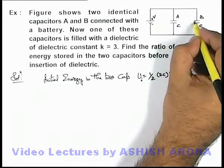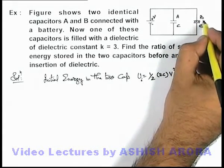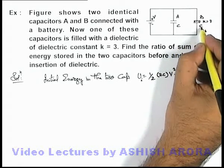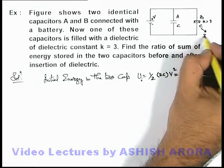If one capacitor is filled with a dielectric of constant k equal to 3, then we can say this capacitance will change from C to kC, that will be 3C.